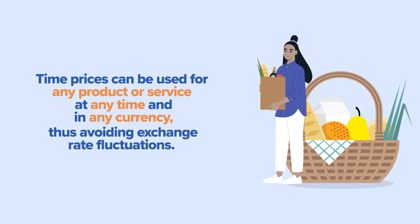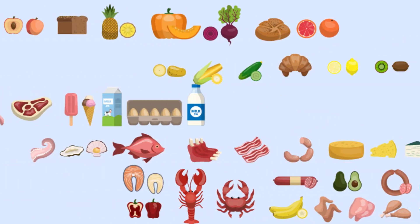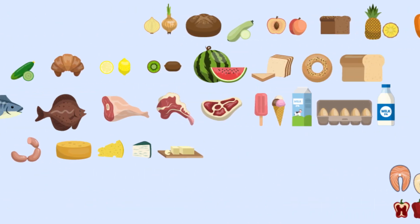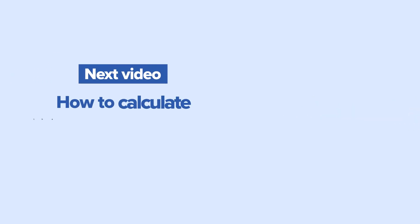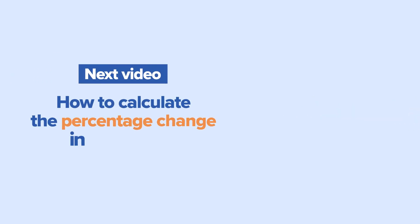Time prices are the true prices and provide an objective way to measure changes in the standard of living. Please watch the next video in this series, titled How to Calculate the Percentage Change in Time Prices, to learn more about how time prices reveal our true abundance.